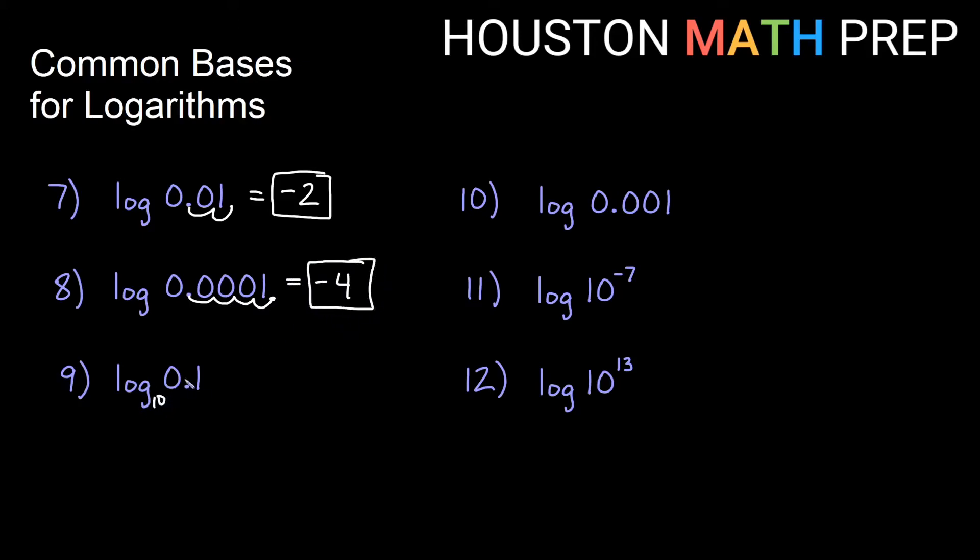This is 10 to what power gives us 0.1? You can read this as 1 tenth, in other words, 1 over 10. So this is the negative 1 power, or you can count the decimal places either way.